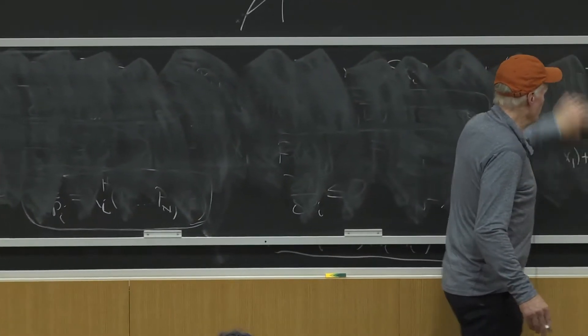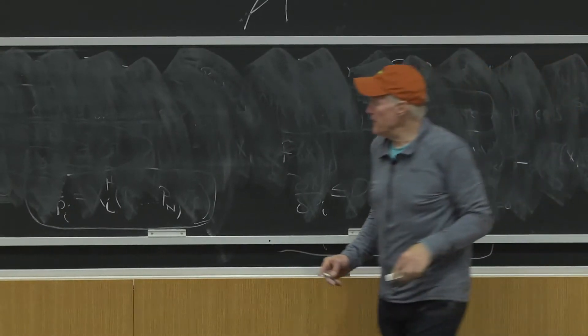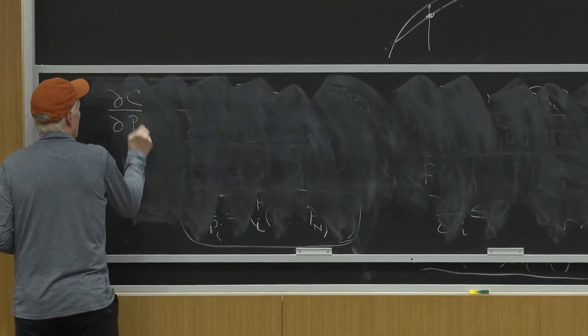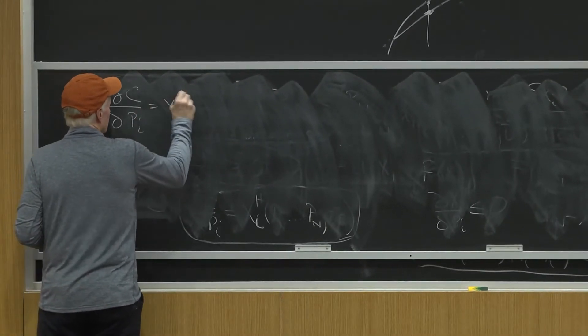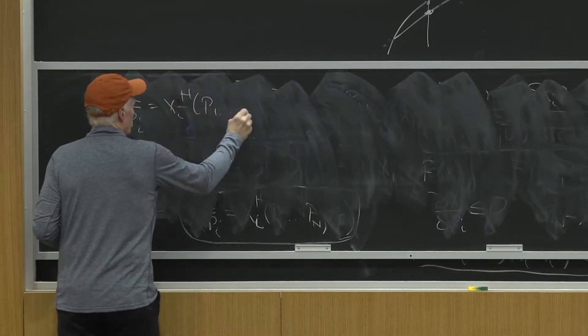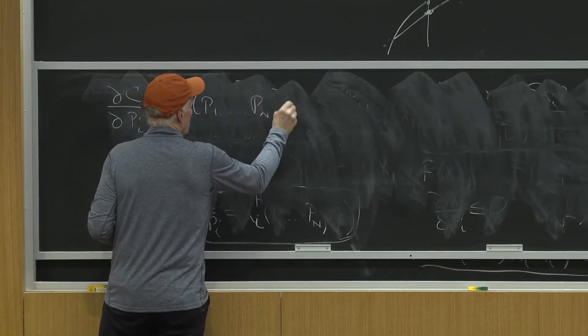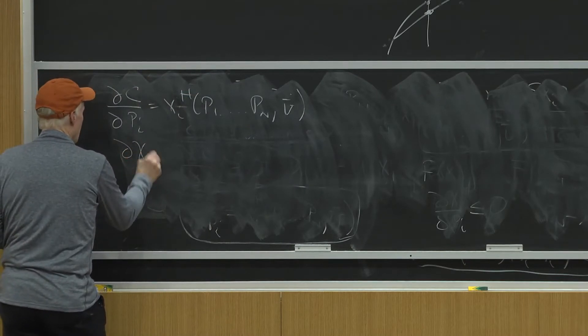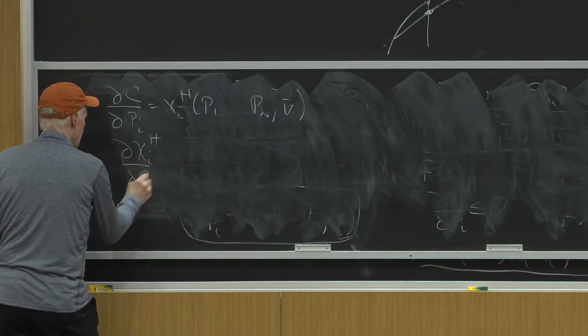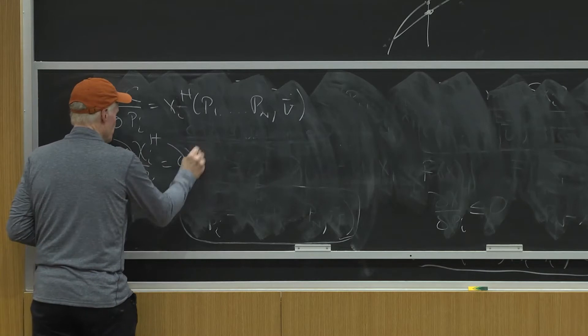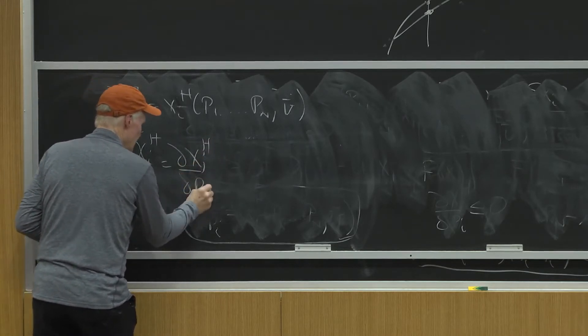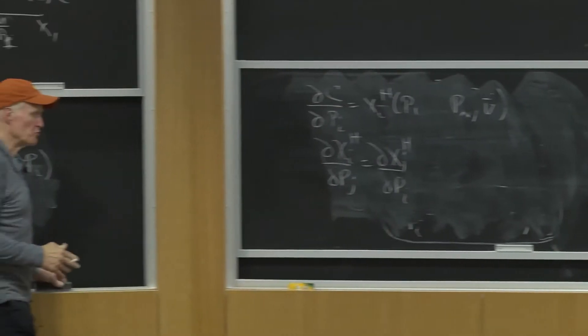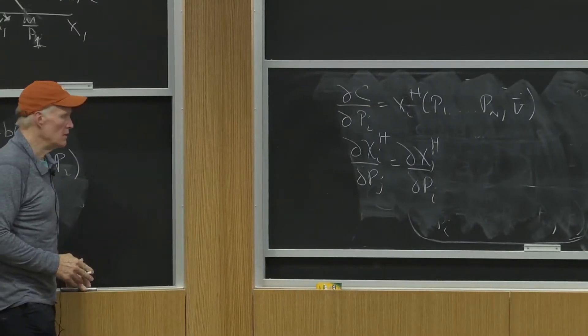We know some important results. We know that partial C partial PI is XIH of P1 up to PNU bar. We know symmetry: partial XIH partial PJ equals partial XJH partial PI. So we know that those cross partial derivatives are equal.